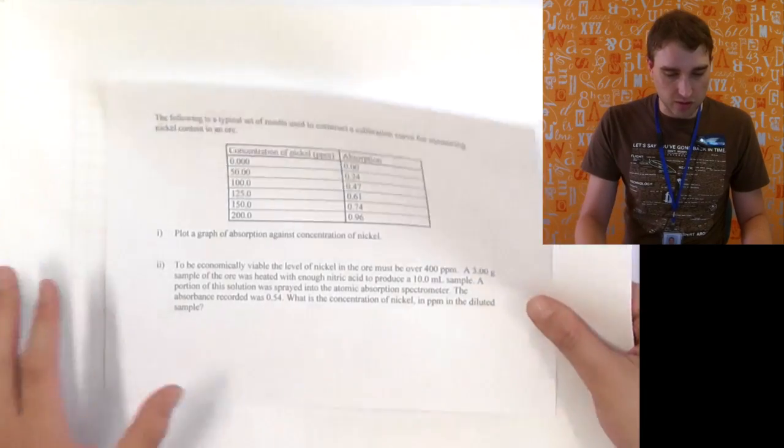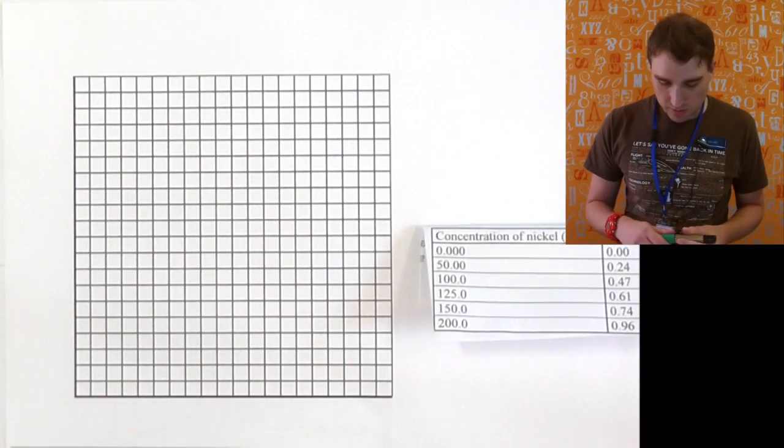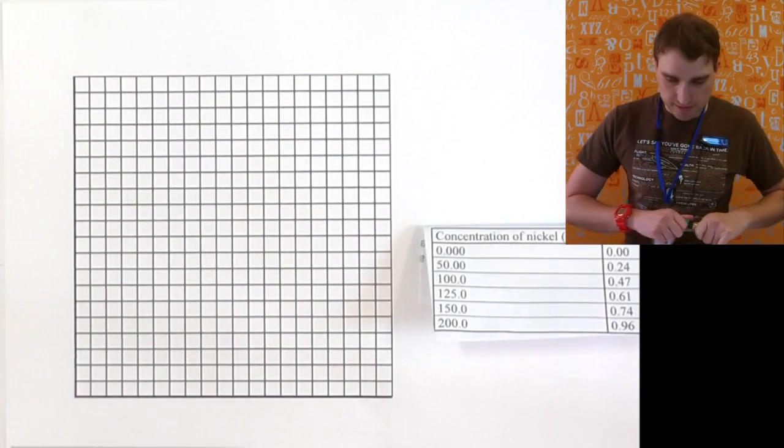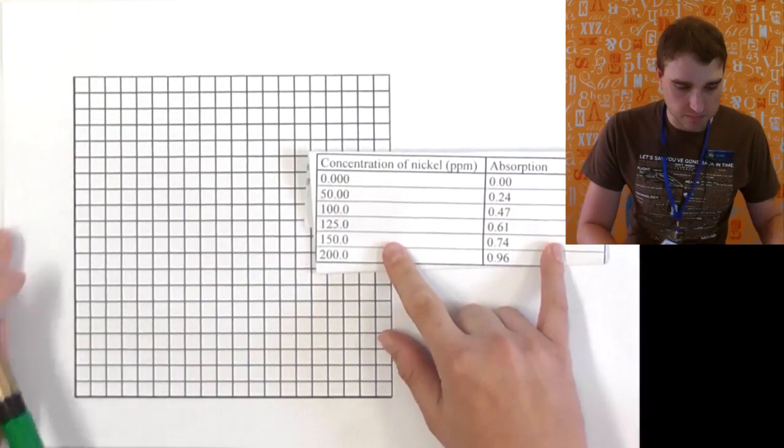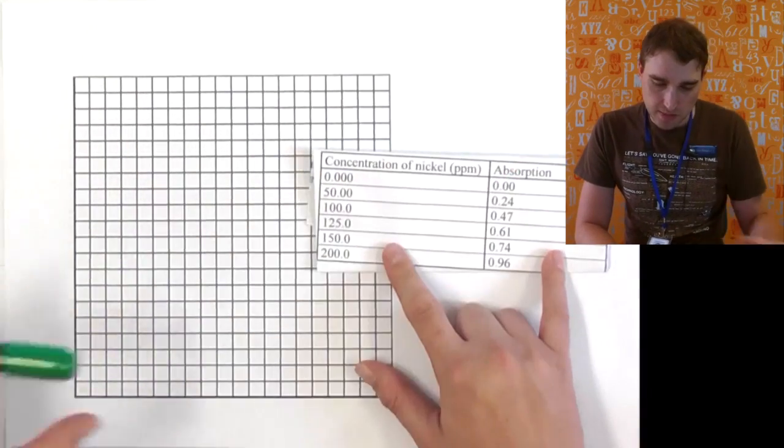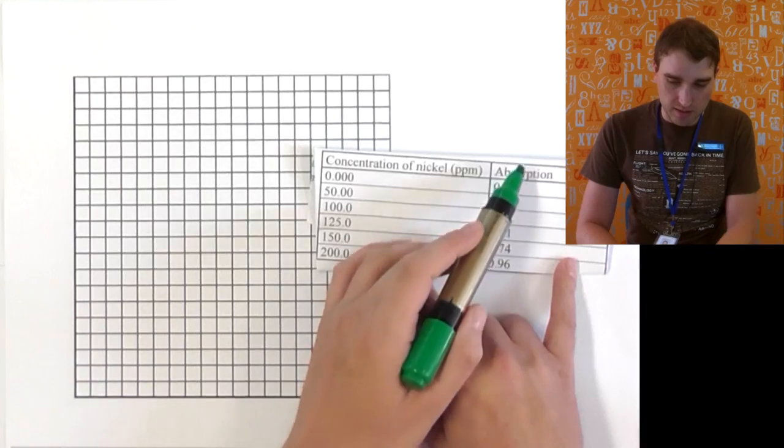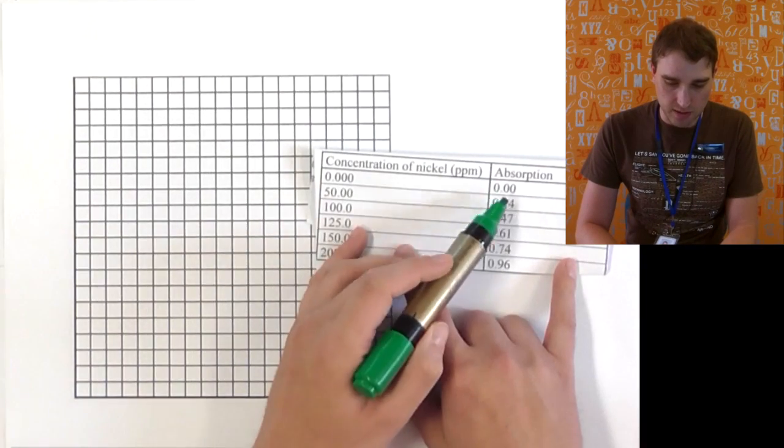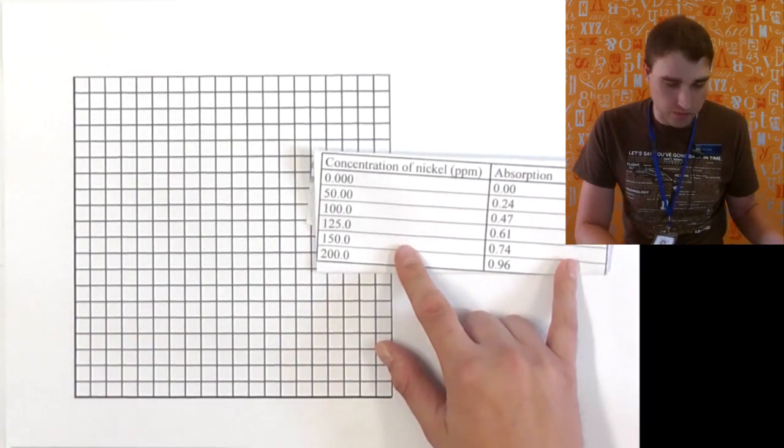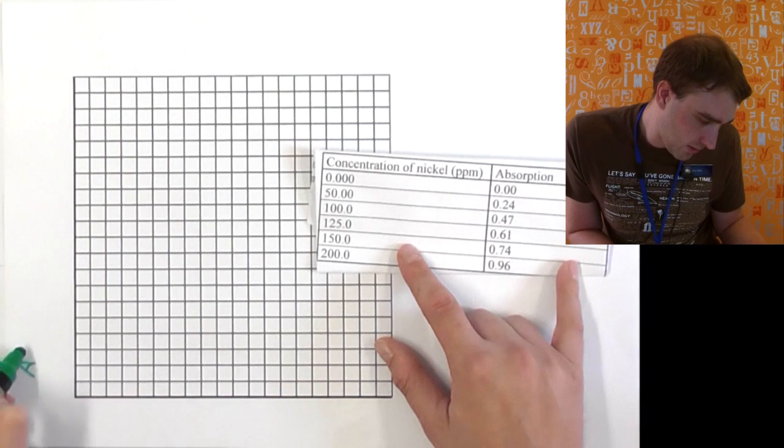So to start with we're going to set up our graph. So the first thing I'm going to do is I'm going to label my axes to make sure I get the right axis being the right thing. Now the absorbance depends on the concentration. So that means the absorbance is dependent variable, dependent goes on the y. So absorption is going to be on the y-axis.